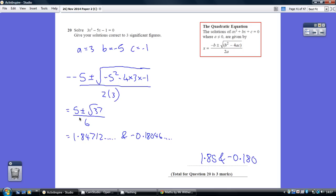So pop this into your calculator. First of all 5 plus root 37 over 6. And secondly 5 minus root 37 over 6 giving you the two solutions.